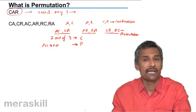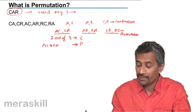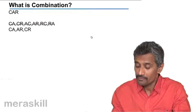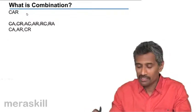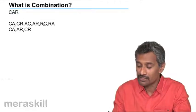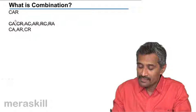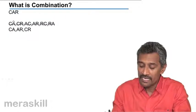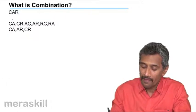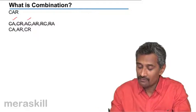This is a very simple example of the concept. Now, what is a combination? When you say C, A, R, there are six possibilities when selecting two at a time. Out of these, C and A and A and C are one and the same.